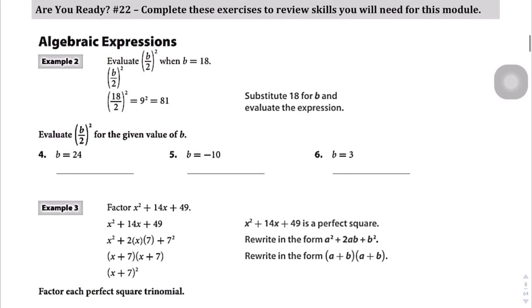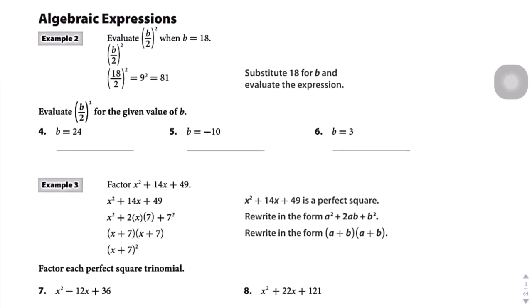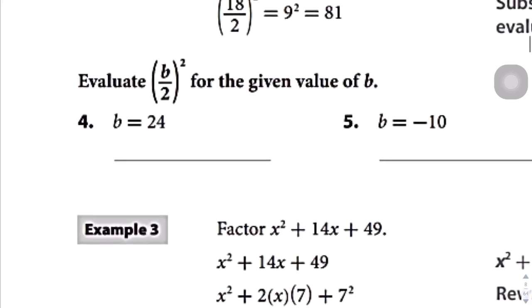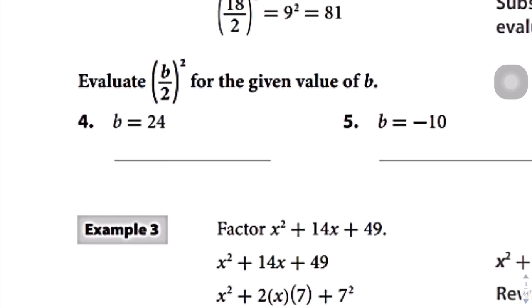Let's jump onto page eight — here are a couple more skills you need to know. They're going to give you a value for b, and you're going to plug it into this expression: b over 2, squared. Right now it means nothing to you, but later on when we actually start learning how to complete the square, it will mean something. For now, all we need to do is procedurally understand that we're just going to plug this in and see what pops out.